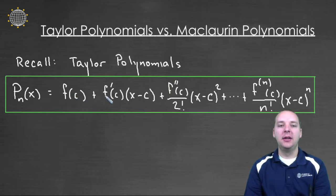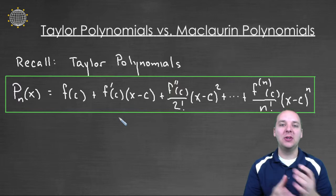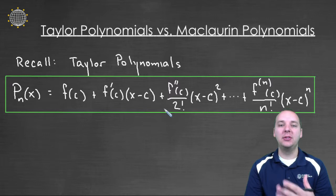f of c plus f prime at c times x minus c. c is the center. So if it's centered at 3, this term would be x minus 3 for example. And then f double prime at 3 over 2 factorial, x minus 3 squared, so on and so forth. We've worked a number of these examples and what I suspect has probably happened is whenever you start these, you're just hoping that the c is 0, right? Because doesn't that make so much of our algebra a lot easier? We wouldn't have x minus 3 squared, we'd just have x squared if this guy was centered at 0.